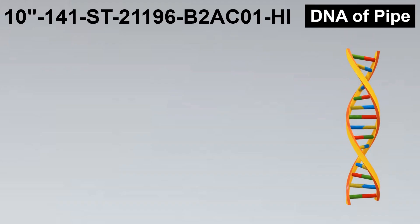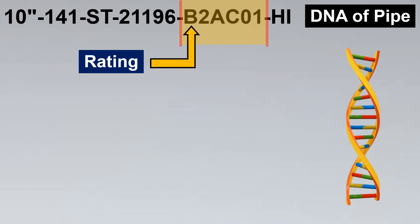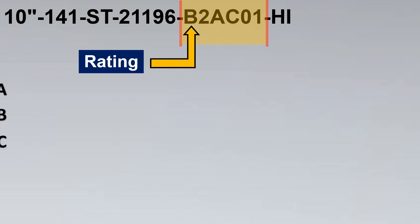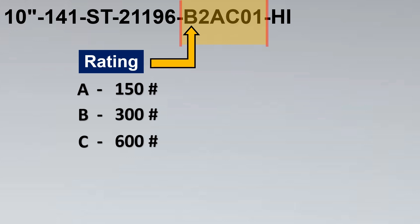So here's our line number mentioned and this is the DNA of the pipe. Let us try to decode the DNA of the pipe. The first thing is the rating. Now if you see here in terms of the rating these alphabets represent, for example A represents 150 rating. B represents 300. C represents 600. D might represent 900 and so on. So this alphabet, first alphabet, usually is used to represent the rating.